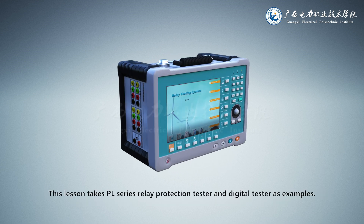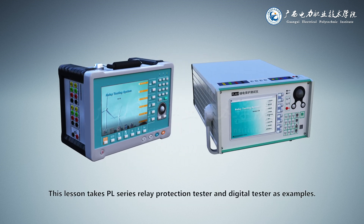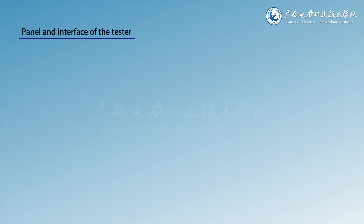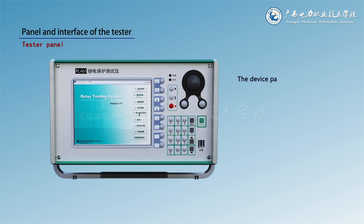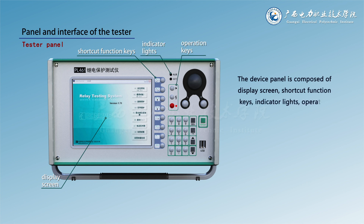This lesson takes the PL series relay protection tester and digital tester as examples. The device panel is composed of a display screen, shortcut function keys, indicator lights, operation keys, keyboard keys, USB interface, and mouse.